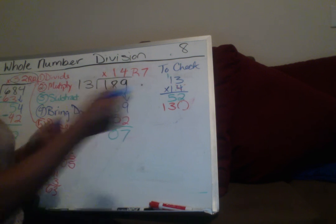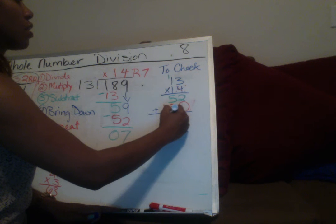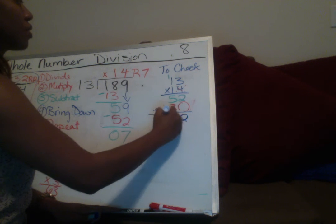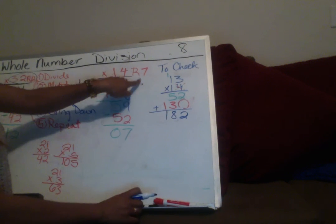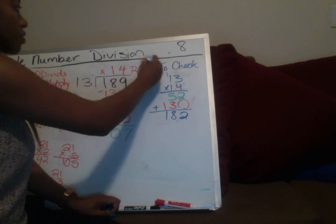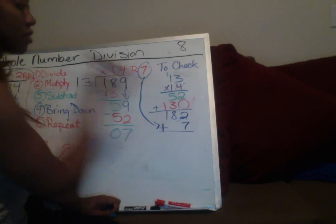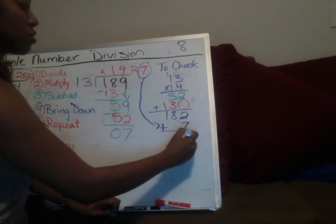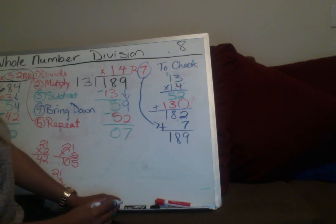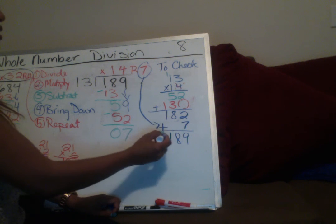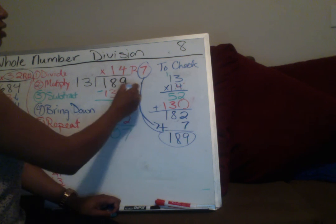Now add the partial products up: 2, 8, 1. But we're not done — you see the remainder? I still need to take the remainder and add it to the answer. 7 plus 2 is 9, giving us 182. That matches our original dividend, so we are good!